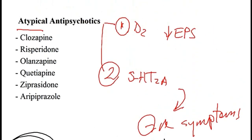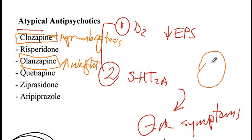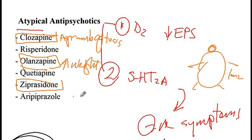High-yield adverse reactions of atypical antipsychotics include agranulocytosis with clozapine, requiring regular monitoring of white blood cell levels. Olanzapine causes significant weight gain — the mnemonic is that the letter O in olanzapine looks like a fat person. Ziprasidone causes a prolonged QT interval. That concludes our discussion.